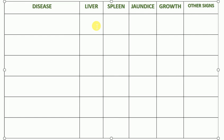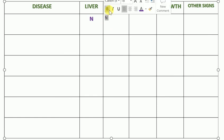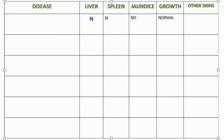The first scenario: a child comes to you and the liver is normal on palpation — not an ultrasound finding, clinically normal. The spleen is not palpable, which is normal. There is no jaundice. The growth of the child is normal. And if you ask about other signs, there are some nail signs. What is the diagnosis?